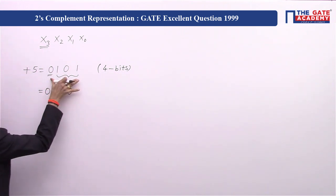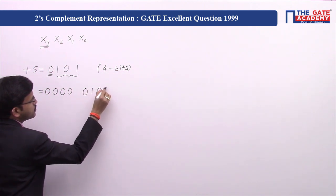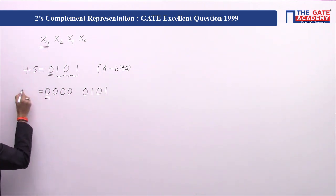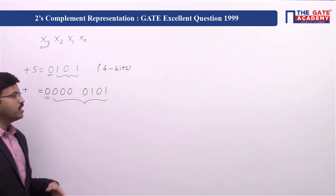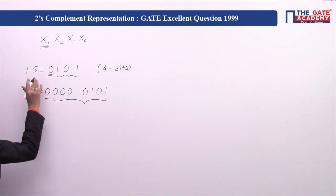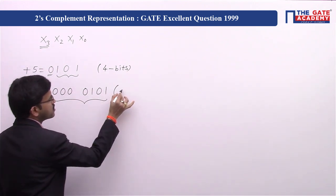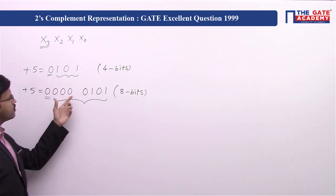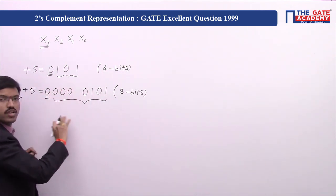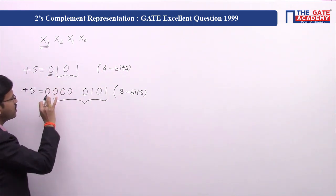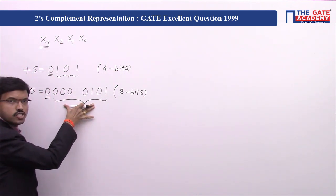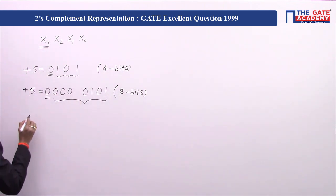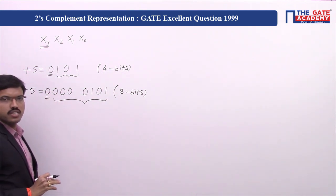To represent +5 in two's complement form with eight bits, we take the four-bit representation 0101 and place four more zeros to the left, giving 00000101. The sign bit is still zero, indicating a positive number, and the remaining bits give the magnitude of five. The equivalent value does not change because the sign bit remains zero and the magnitude is preserved.